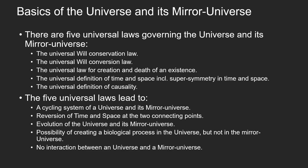I have shared with you the five universal laws in the new philosophy theory in part two of this video series. They are: the universal will conservation law, the universal will conversion law, the universal law for creation and death of an existence, the universal definition of time and space including the super symmetry in time and space, and the universal definition of causality.